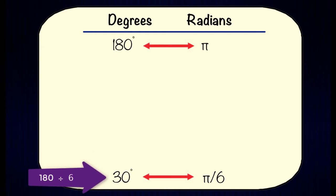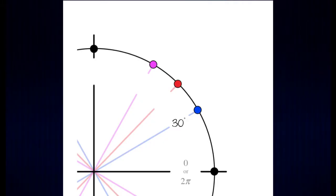Well if we take 180 degrees and divide it by six we would get 30 degrees. That means 30 degrees is equivalent to pi over six radians. So now if we go back to quadrant one in our unit circle we can replace 30 degrees with pi over six radians.